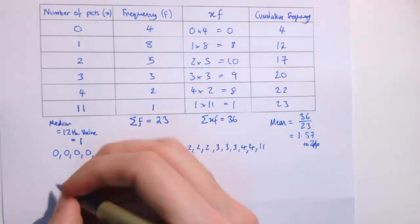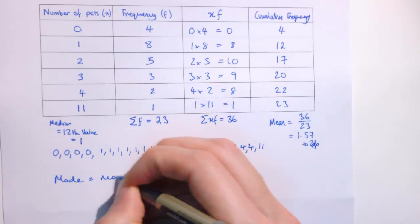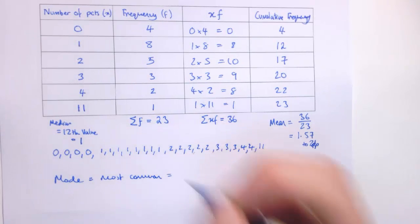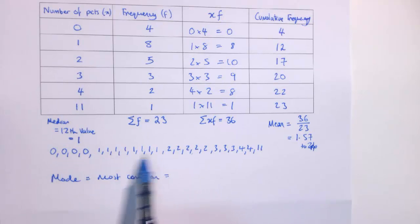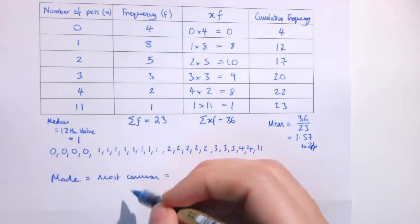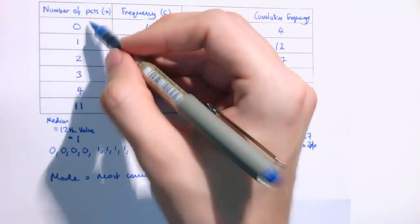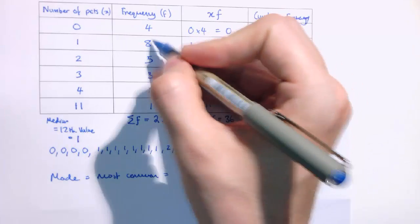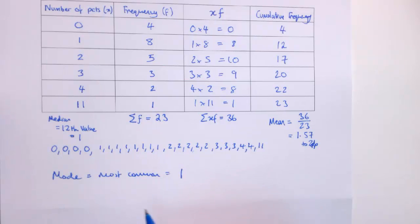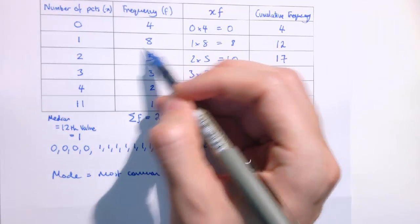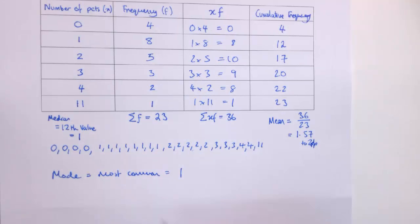Now we've also got the mode. The mode is the most common value — the one that occurs most often. We're thinking about which value appears most often in this list, and it's obviously 1: there are more 1s than anything else. To find the mode directly from the frequency table, we just look for the highest frequency, which is 8, and that corresponds to the value 1. So the mode is 1, not 8. The most common mistake is to use 8 as the mode — but 8 is how many people have 1 pet; 1 is the actual mode, the most common number of pets.